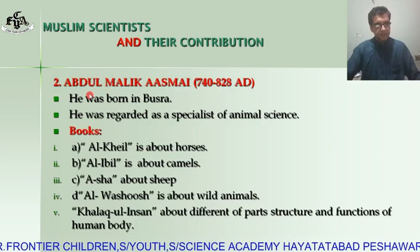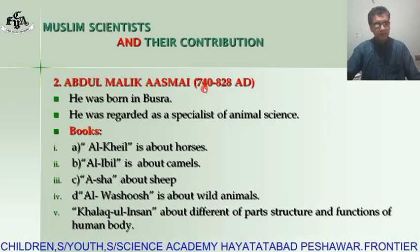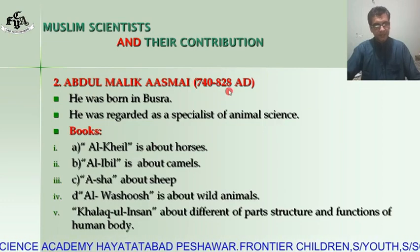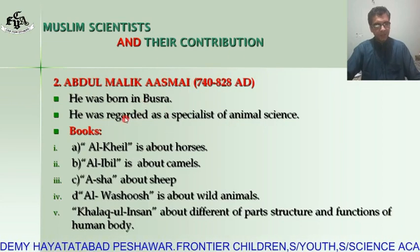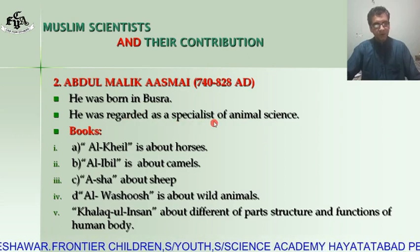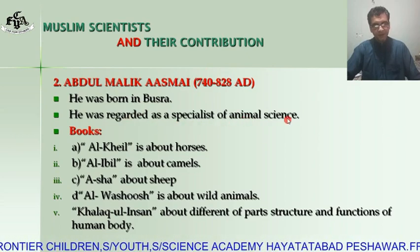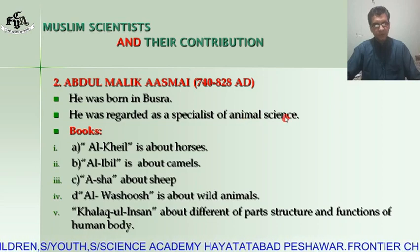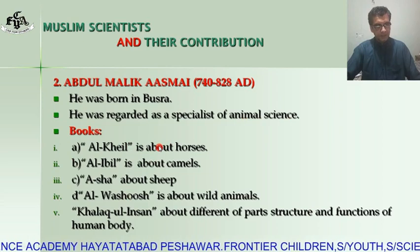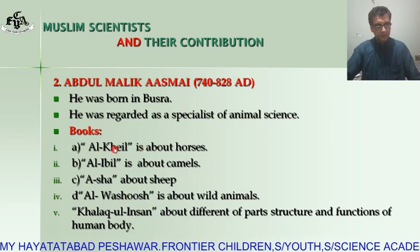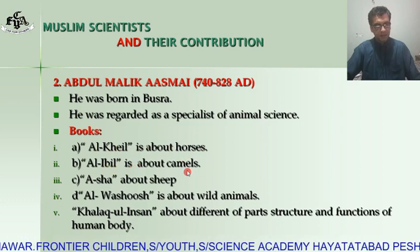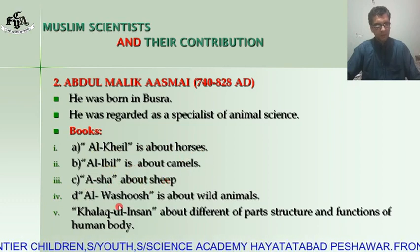The next scientist is Abdul Malik Asma'i, 740 to 822 AD. He was born in Basra. He was regarded as a specialist of animal sciences, so he was basically a zoologist. He wrote some books: Al-Heel, about horses; Al-Ibl, about camels; and Al-Sha, about sheep.